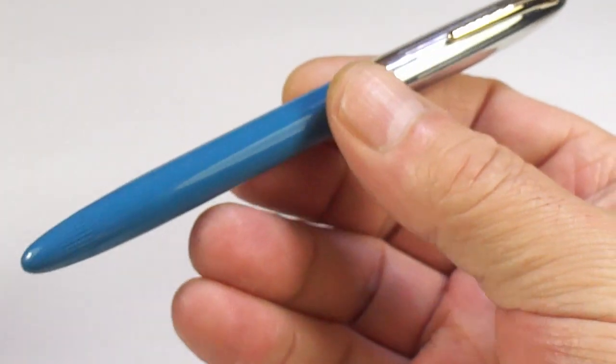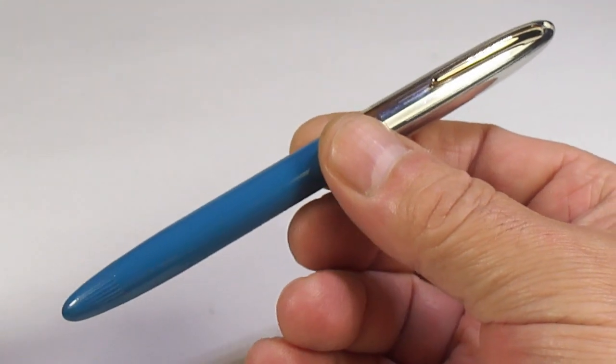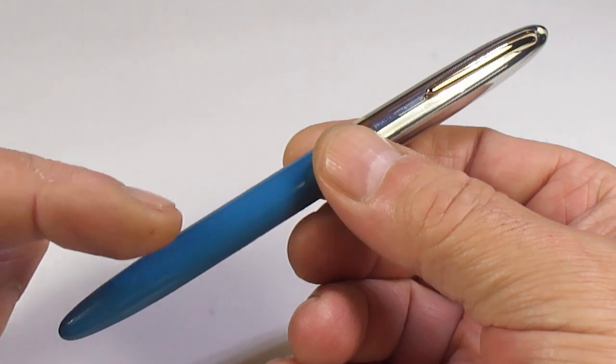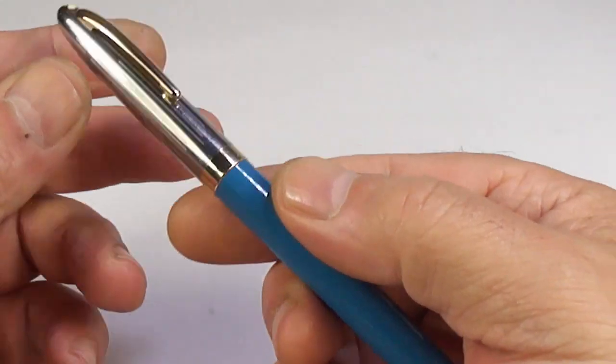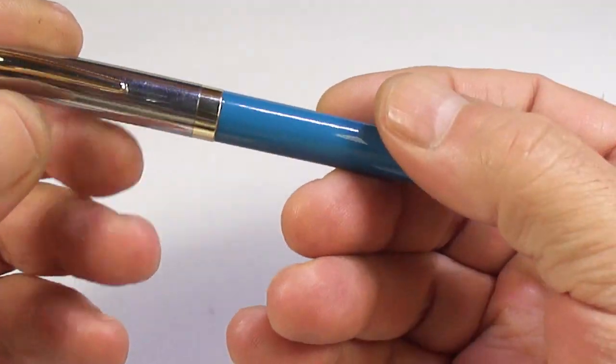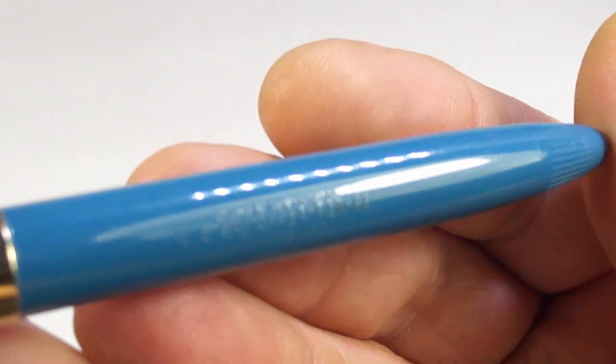So, all in all, a stunning example. The size of this pen is 140 millimeters capped. Around the diameter of the barrel, it's 11 millimeters in diameter. This one is actually made in Australia.